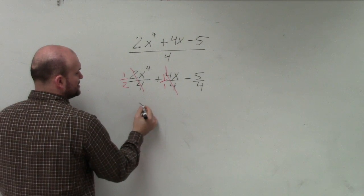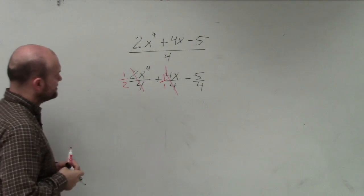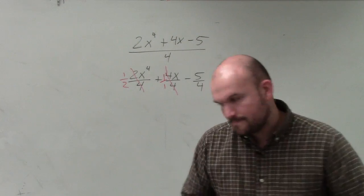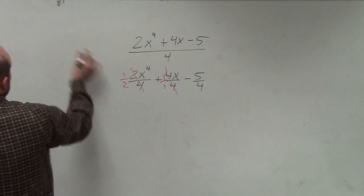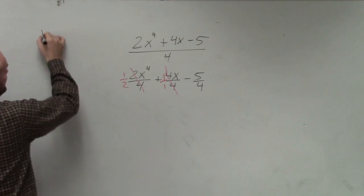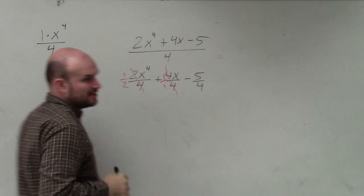So therefore, 1 times x to the 4th is just... Let's see how I can write this. When we are... you guys could see this as basically this now: my coefficient is 1 times x to the 4th divided by 4. Does everybody agree with me?